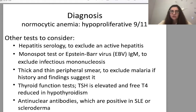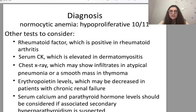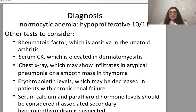Thin peripheral smear to exclude malaria if history and findings suggest it. Thyroid function tests — TSH will be elevated and free T4 reduced in hypothyroidism. Anti-nuclear antibodies are positive in lupus erythematosus or scleroderma. Rheumatoid factor is positive in rheumatoid arthritis. Serum creatinine is elevated in dermatomyositis. Chest X-ray may show infiltrates in atypical pneumonia or smooth mediastinal mass in thymoma. Erythropoietin levels may be decreased in patients with chronic renal failure. Serum calcium and parathyroid hormone levels should be considered if associated secondary hyperparathyroidism is suspected.